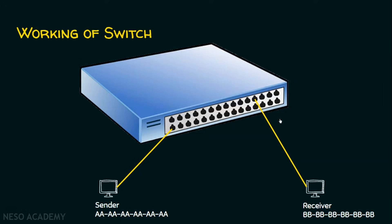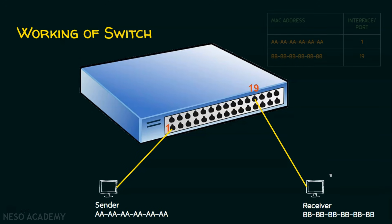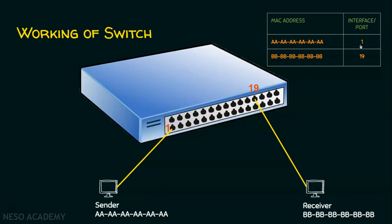The switch uses numbers to identify each individual port or interface. The sender computer is connected to interface 1, and the receiver computer is connected to interface 19. Since switch has memory, it maintains a MAC address table. This table stores the MAC address of each device and the interface it is connected to. So MAC address all A's is mapped to port 1, and MAC address all B's is mapped to port 19.